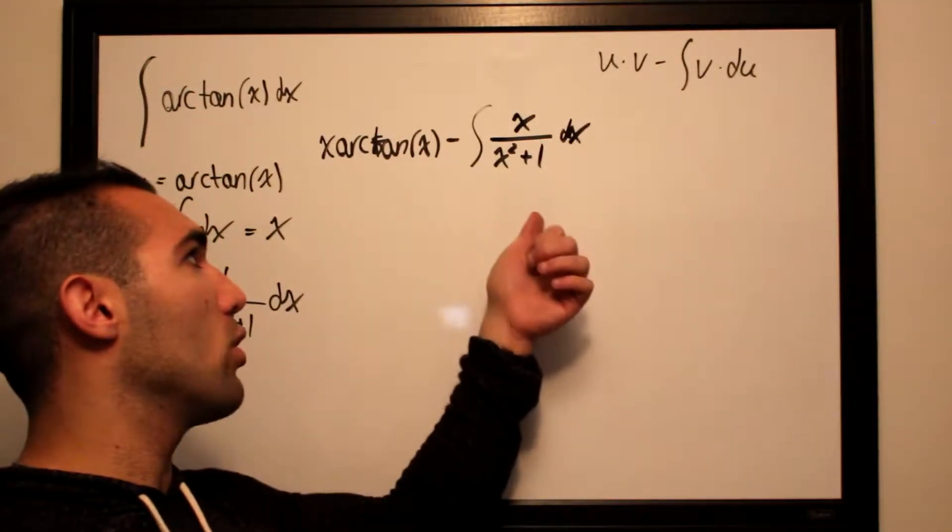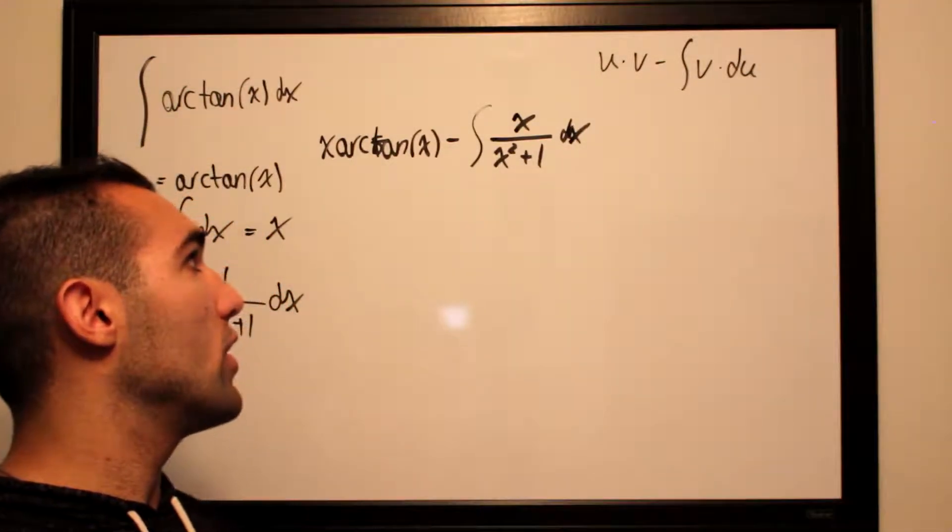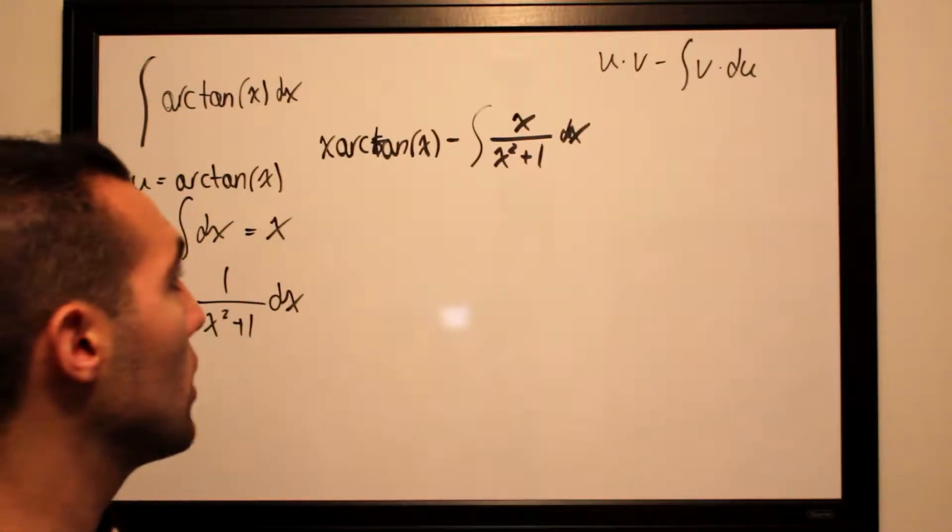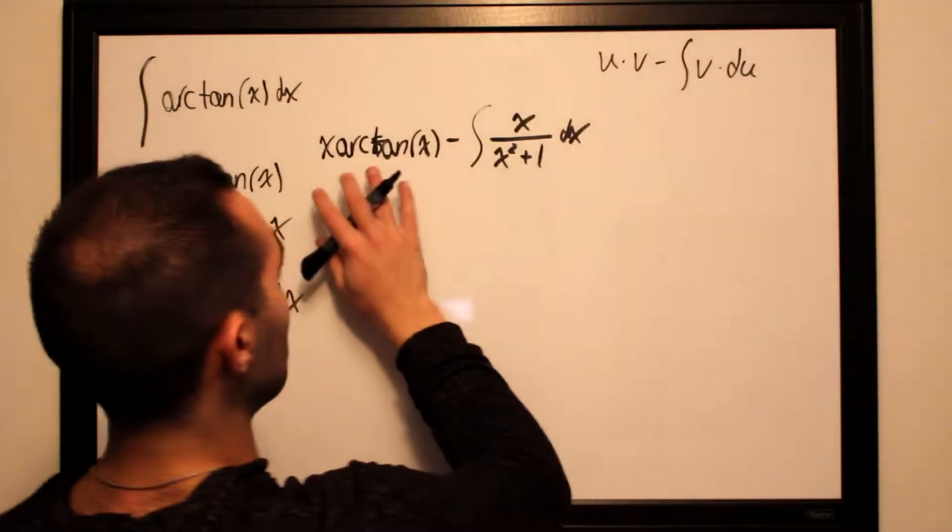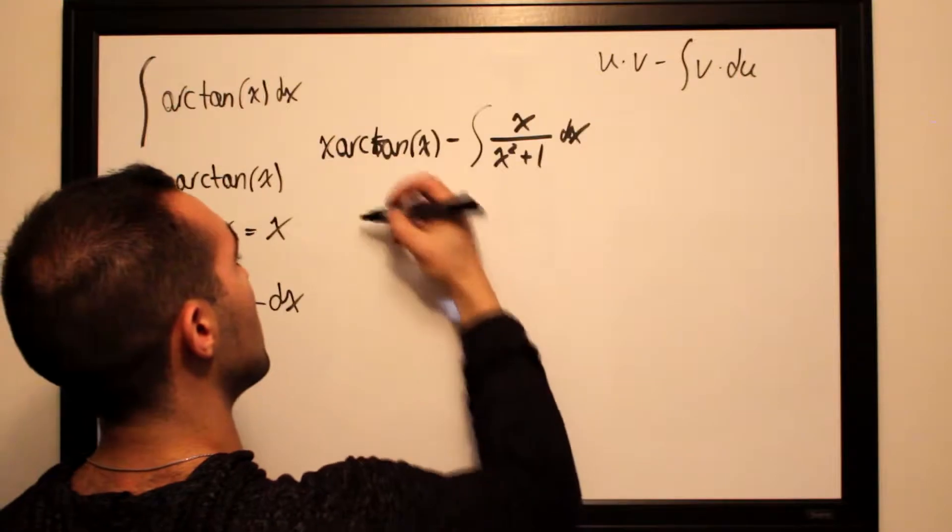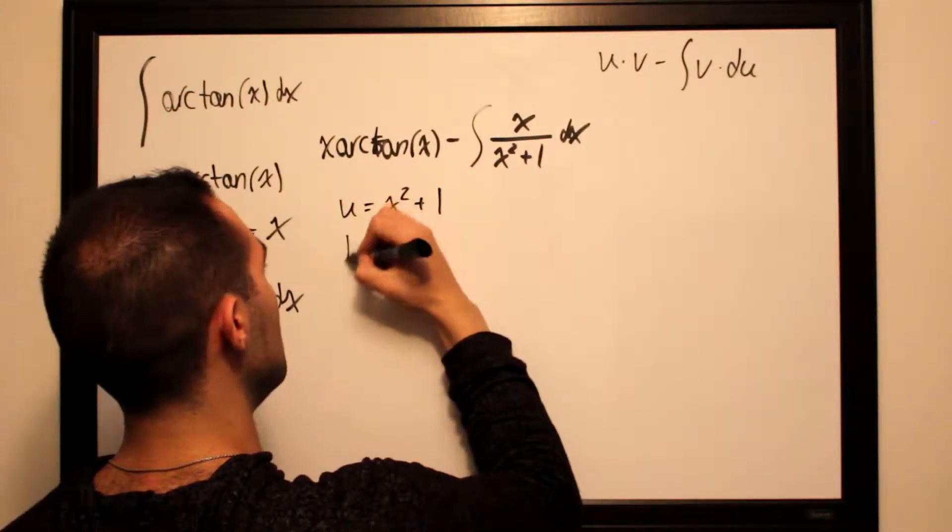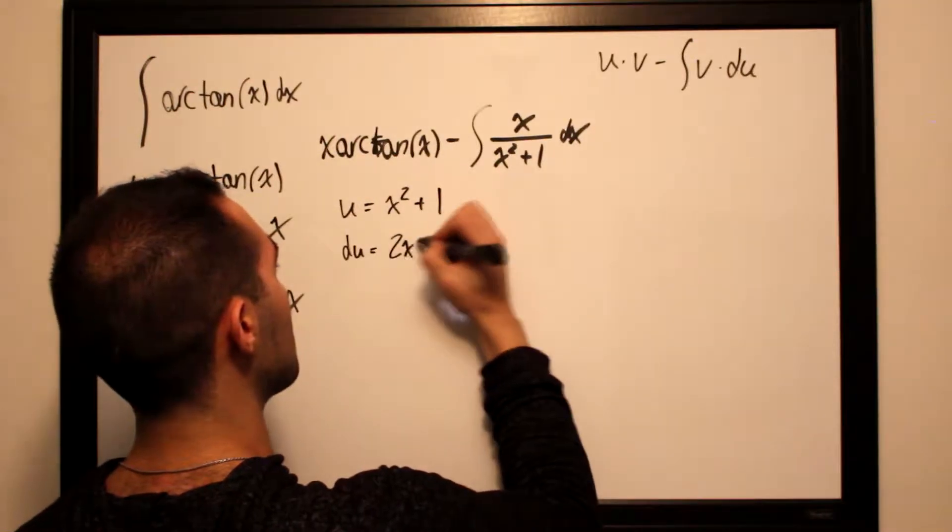Now this is just a matter of evaluating this integral using a substitution where u will be x squared plus 1. Let's ignore the first part of the integral for now and just focus on evaluating this. So u equals x squared plus 1, du equals 2x dx.